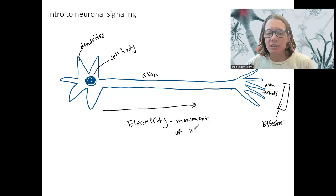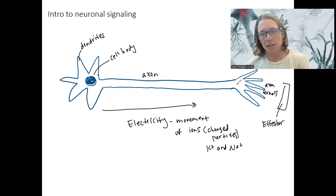What are ions? Ions are charged particles. And it's primarily going to be potassium and sodium. It is potassium and sodium for the transmission of electricity down this axon.